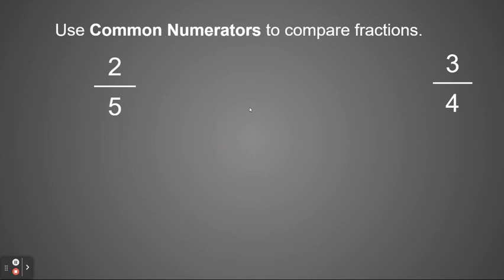We can also do this finding common numerators. So again, we can use common numerators to figure out and compare fractions as well as to order fractions. So in this case, we have 2 as a numerator and 2 fifths and 3 as a numerator and 3 fourths. Our common numerator would be 6.